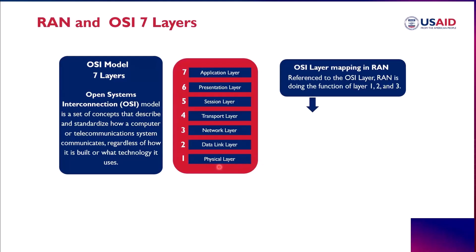Such as copper or fiber optic cable. Then we have the Data Link layer, responsible for reliable transmission of data over a shared physical medium using protocols such as Ethernet or Wi-Fi. Then we have the Network layer, responsible for routing data between different devices on the network using protocols such as IP or MPLS. Then we have the Transport layer, responsible for ensuring reliable and efficient data transfer between devices on a network.